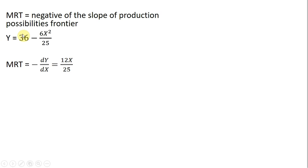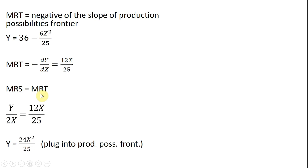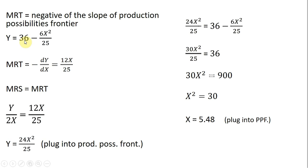Using Robinson's production possibilities frontier, we take the derivative and take its absolute value. The x squared term brings down a 2, giving 12x divided by 25 — we drop the minus sign because we're taking the absolute value. Setting MRS equal to MRT, and multiplying both sides by 2x, we solve for y, getting 24x squared divided by 25. We plug this back into the production possibilities frontier, substituting 24x squared divided by 25 wherever we have y.